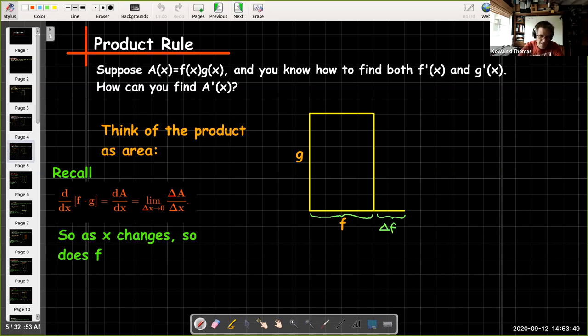Well, as x changes by a little bit, so does f. So now the base of our rectangle is going to change a little bit. As x changes g will change too, so the height of the rectangle changes as well.